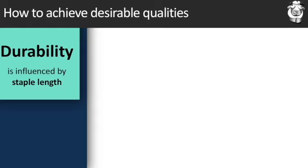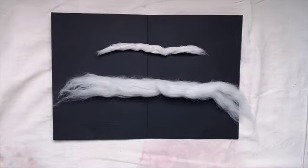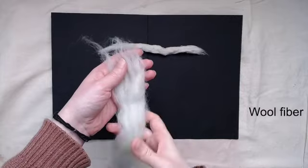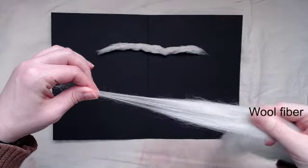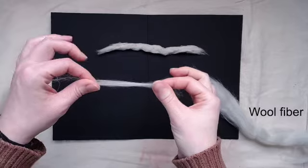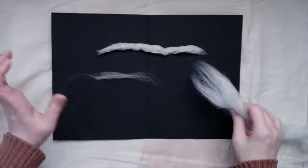We just looked at strength, but now let's look at durability. While the type of fiber influences strength, for the durability portion it's also going to be the staple length of that fiber — how long or short it is — that's going to influence how the fabric behaves. Longer fibers in general are stronger than shorter fibers.